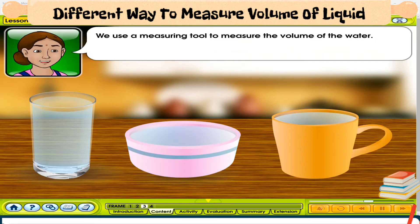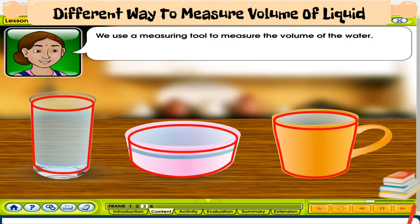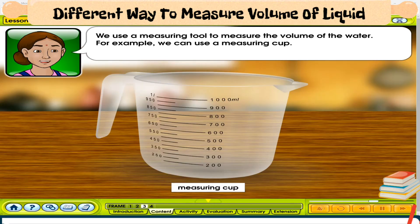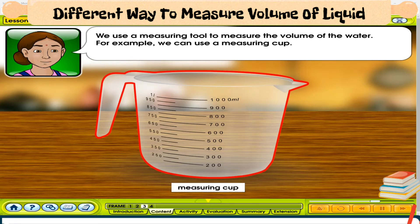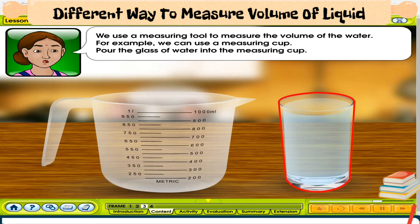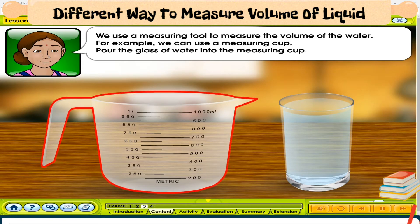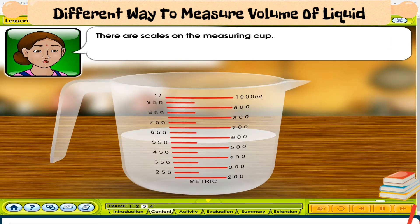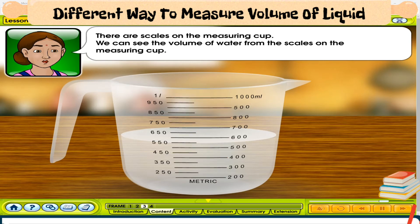We use a measuring tool to measure the volume of the water. For example, we can use a measuring cup. Pour the glass of water into the measuring cup. There are scales on the measuring cup. We can see the volume of water from the scales on the measuring cup.